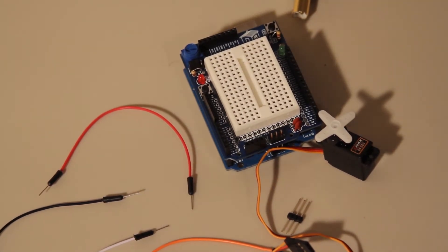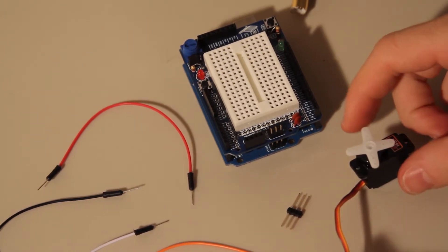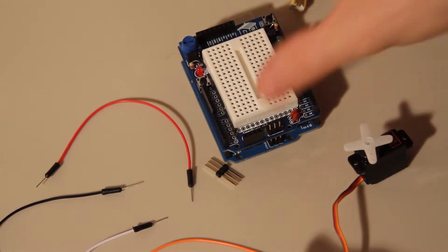Alright, so for this one we're going to do the servo. We're going to use the servo which comes with the Ultimate Controller Pack. We're going to use a 3-pin header, 4 jumper wires, and the Maker Shield.